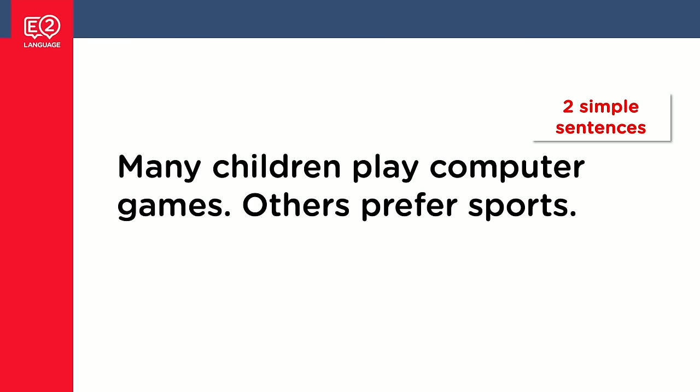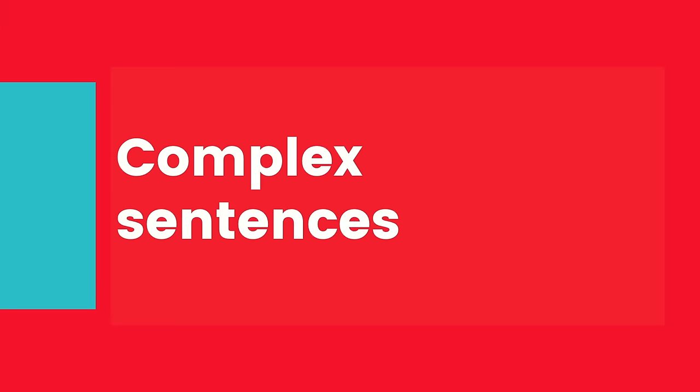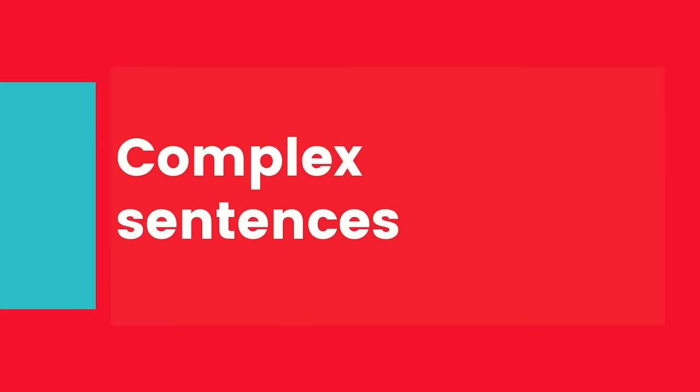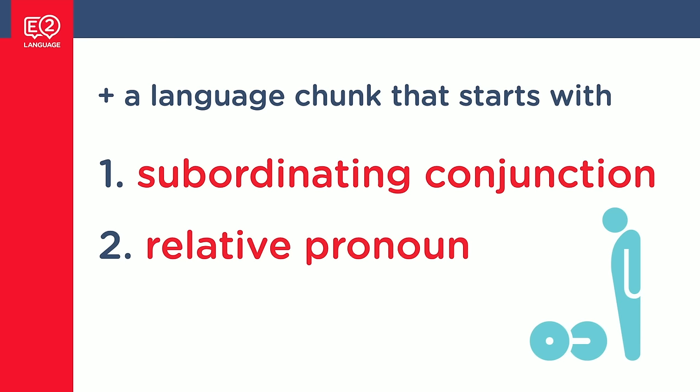Quick recap: we've got simple sentences — 'Many children play computer games. Others prefer sports.' Now we know how to make compound sentences: 'Many children play computer games, but others prefer sports.' So now we're up to the big one — complex sentences. A compound sentence needs two complete thoughts with a coordinating conjunction in between. A complex sentence needs a similar type of word, but we call these subordinating conjunctions. A complex sentence includes a clause that starts with a subordinating conjunction or a relative pronoun.